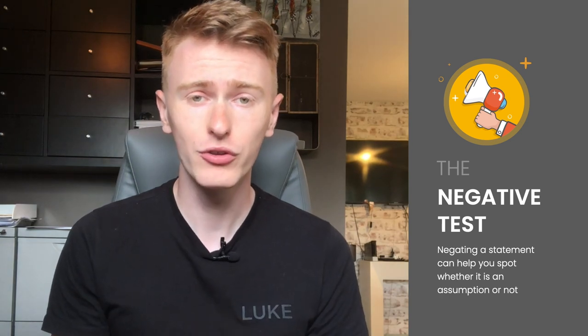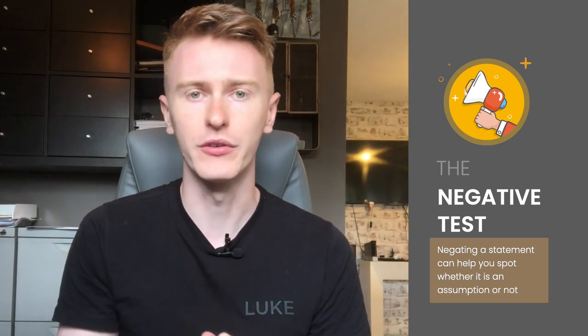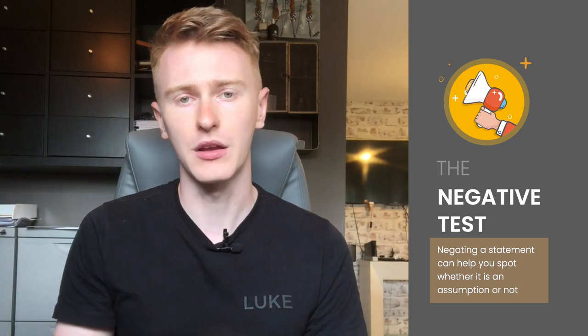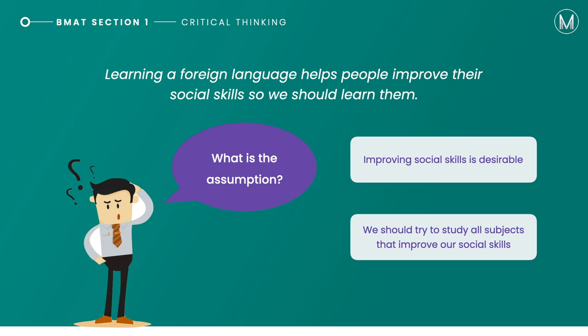The negative test is one of the crucial ways you can identify an assumption. It involves negating one of the answer options — you say 'it is not true that' in front of the supposed assumption. If that negative version damages the argument, then you know you've found the correct assumption, because it's the unspoken link that you've just damaged. Let's work through an example: learning a foreign language helps people improve their social skills, so we should learn them. What is the assumption? There are two options: either improving social skills is desirable, or we should try and study all subjects that improve our social skills.